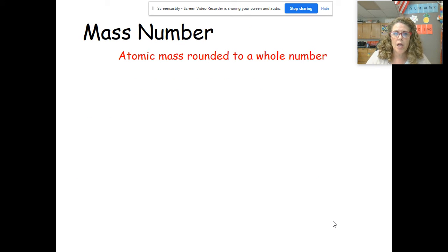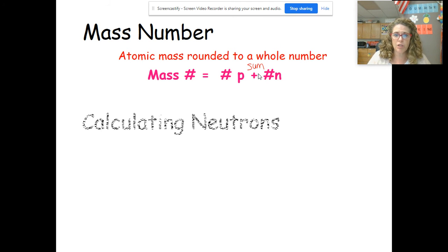So our mass number is our atomic mass rounded to a whole number. On your periodic table you have decimal numbers which we'll get into more later, but the mass number is rounded to the nearest whole number. The mass number is the sum of the protons plus the neutrons, because that makes up the mass of the atom.